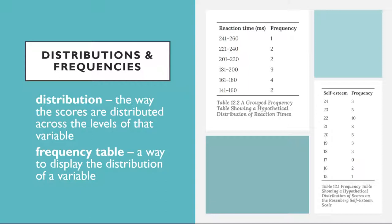There are a few other points worth noting about frequency tables. First, the levels listed in the first column usually go from the highest at the top to the lowest at the bottom, and they usually do not extend beyond the highest and lowest scores in the data. For example, although scores on the Rosenberg Scale can vary from a high of 30 to a low of 0, table 12.1 only includes levels from 24 to 15 because that range includes all the scores in this particular data set.